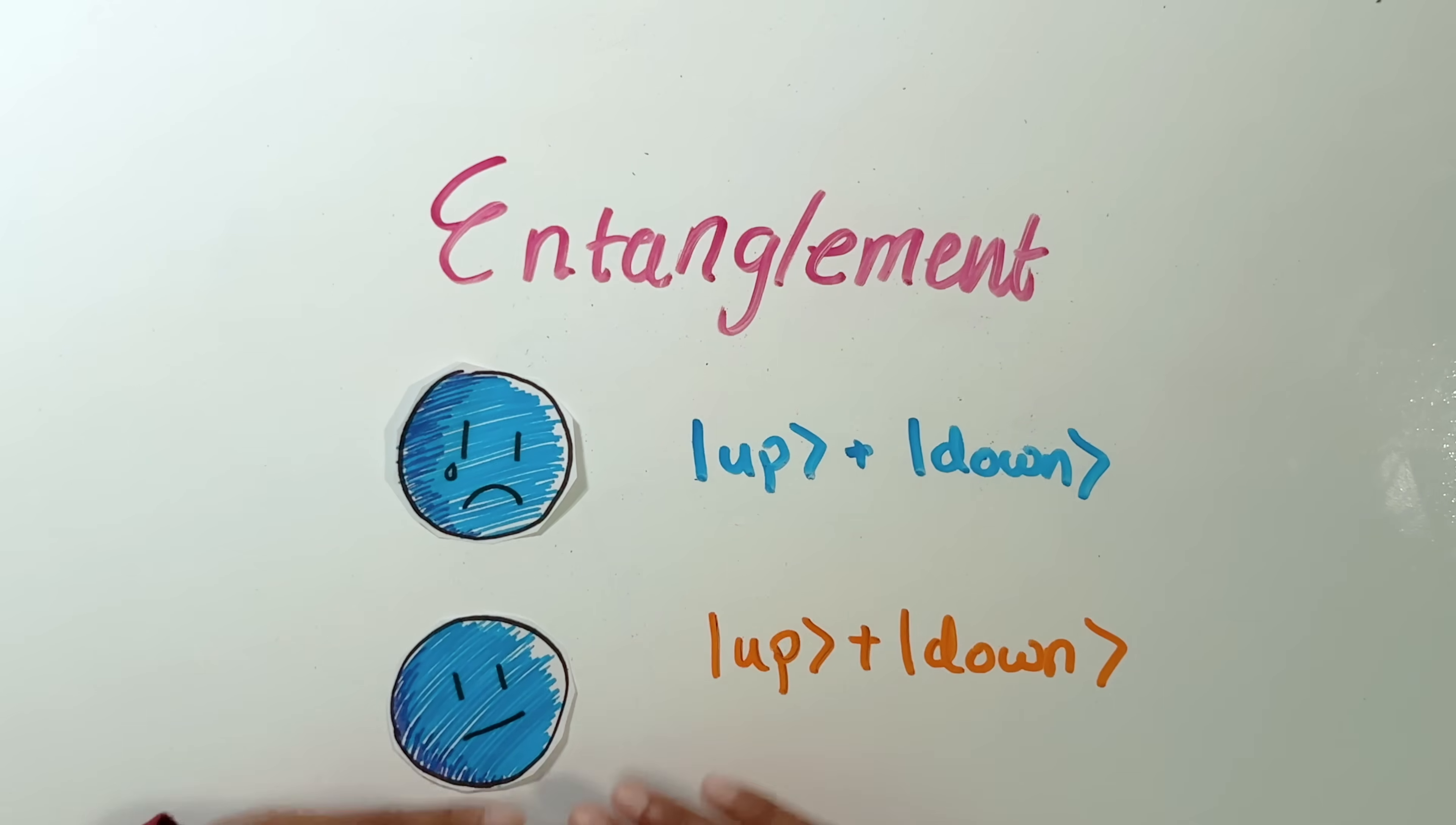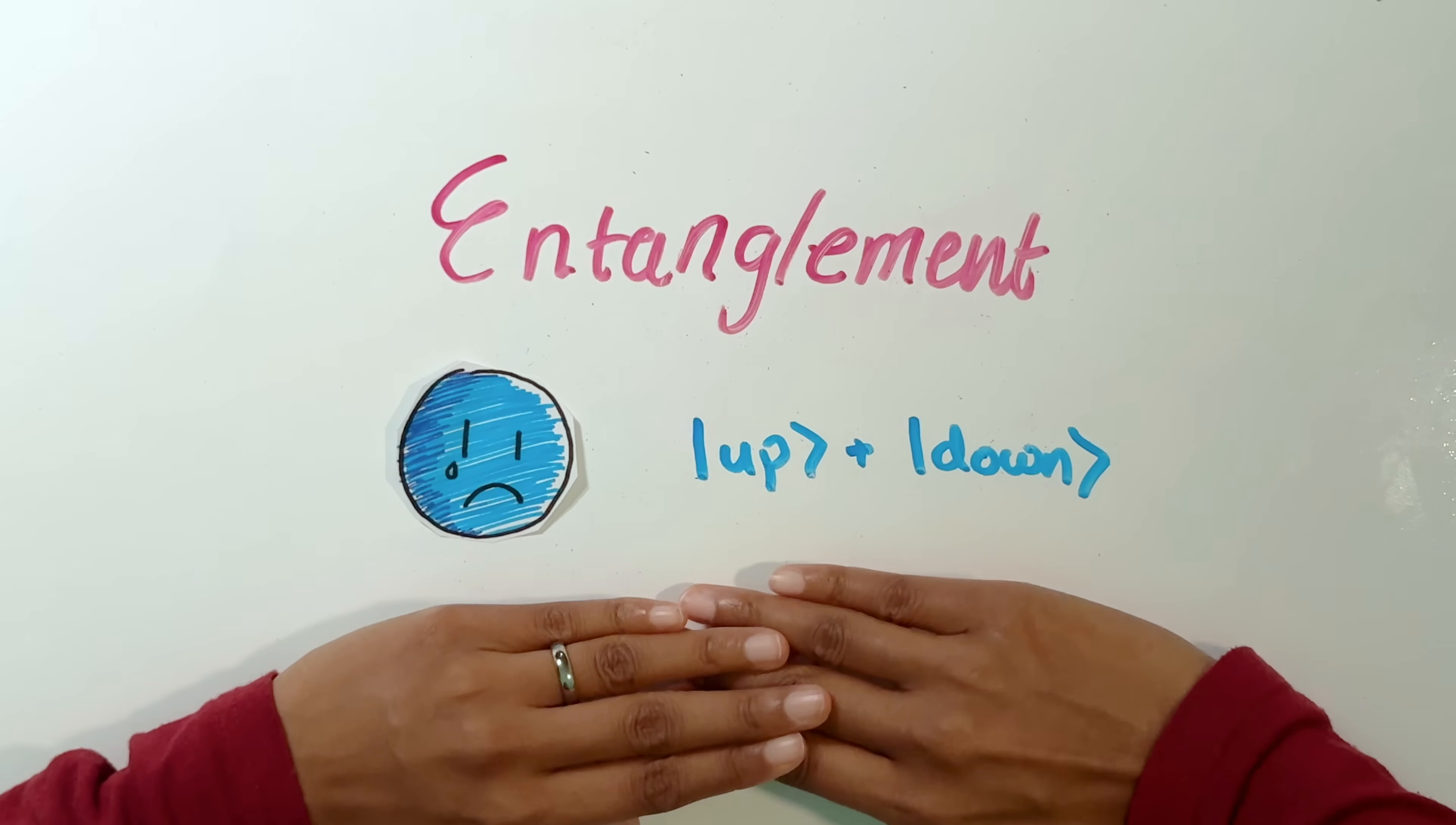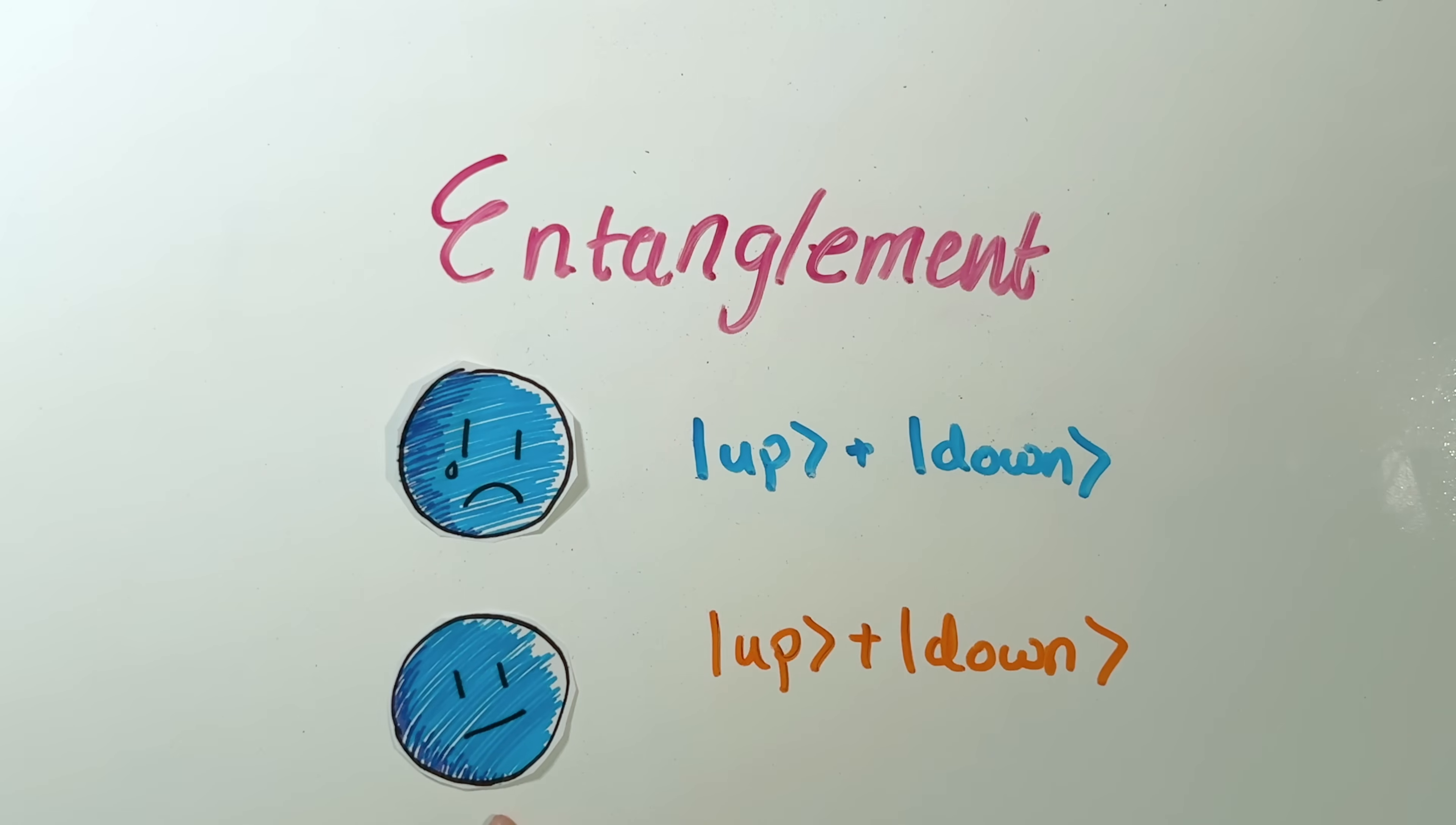And here we can see that it is. The state of the first object is up plus down. The state of the second object is up plus down. So we didn't have to mention the other electron when we were talking about this state. And neither did this state mention that electron. So this still is an entanglement.